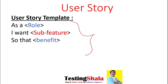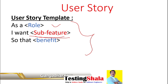Earlier there was a feature; now the user story has been further divided into a sub-feature. The template remains the same: 'As a role, I want to do a certain sub-feature so that I get a certain benefit.' This is the user story template.